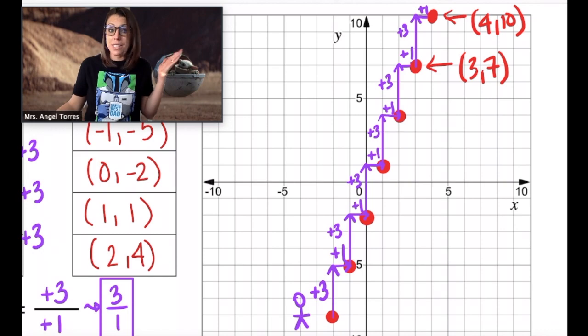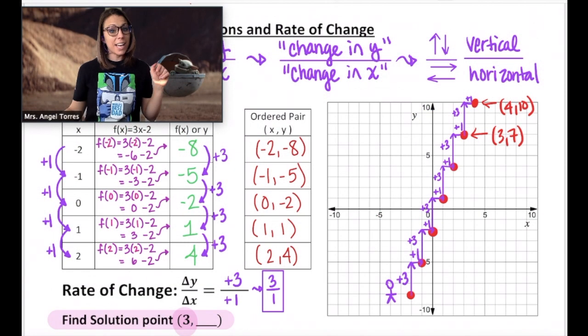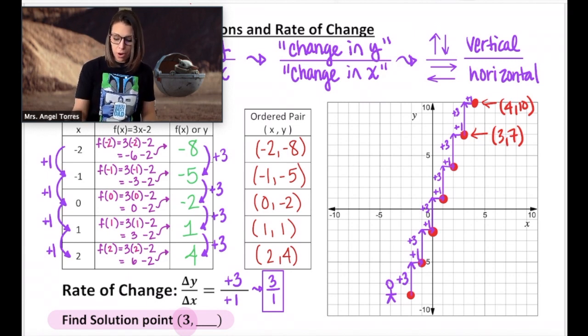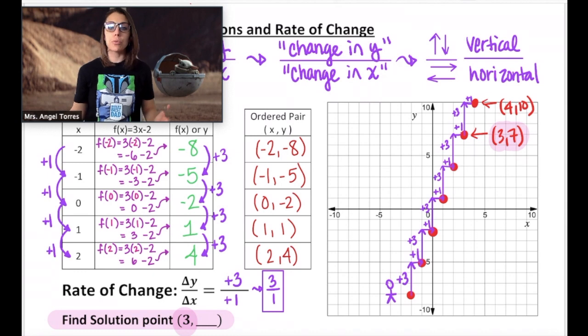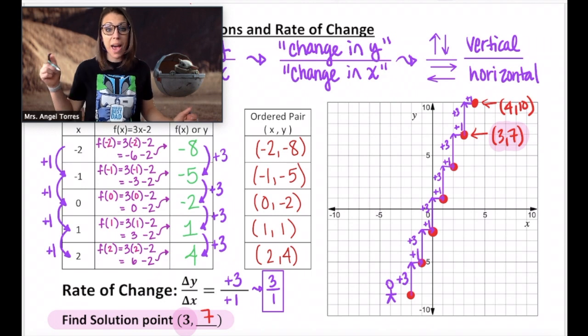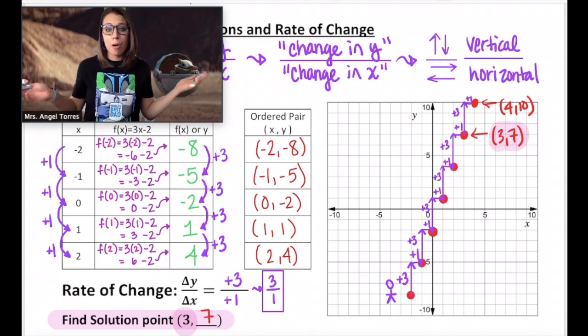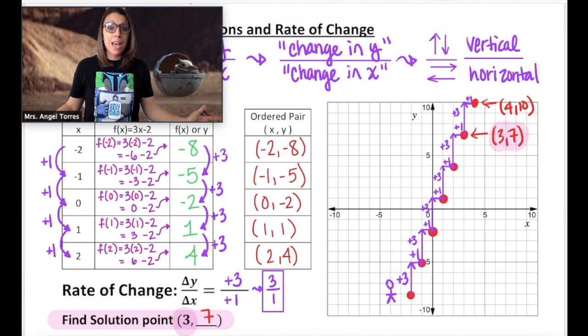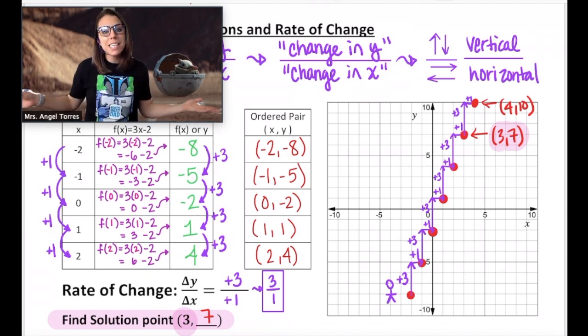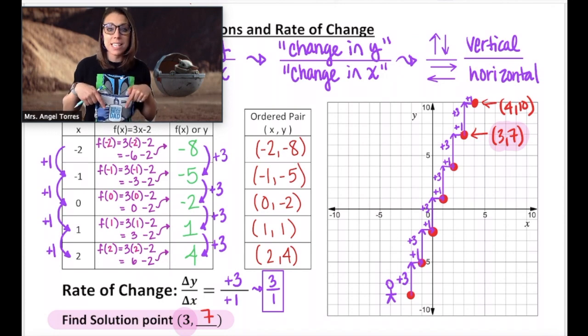So now that we have this graph, we can answer this question. What is the solution point when x is 3? Well, we already know that. That would be (3, 7). So when I input 3 into my function, the rate of change is showing me that that pattern is going to continue. My output is going to be 7. And we can use that rate of change to find millions and millions of other points that would make this function true.